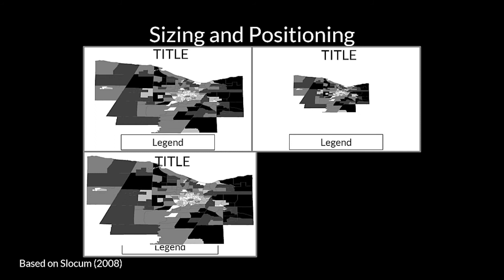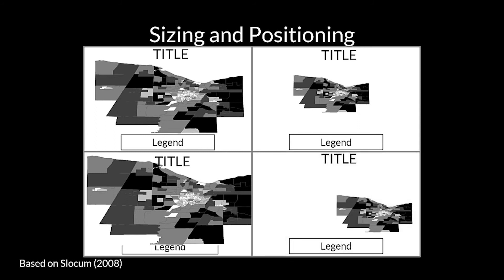Finally, this image shows an example where the size and position are both insufficient. Note how the mapped area is not centered with the title and legend, and is too small, thus creating large amounts of white space. A topic closely related to sizing and positioning is map balance, and I'll talk about map balance next.